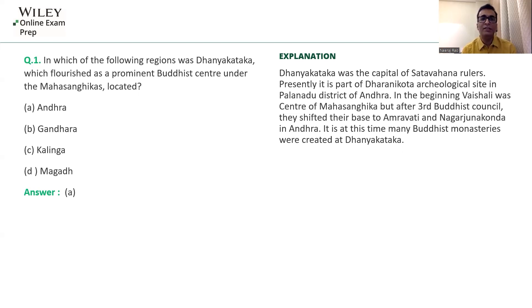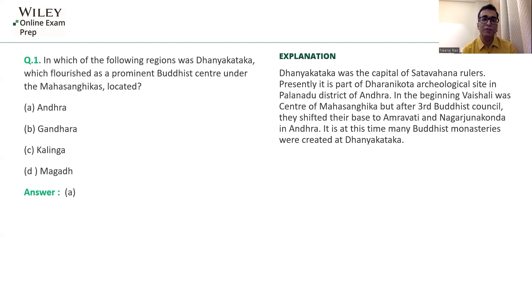Dhanya Katak, mentioned in this question, was originally the Dharanikota area in Palanadu district of Andhra. Here, seven branches of the Mahasangika developed. Moreover, this Mahasangika branch gave rise to Mahayana Buddhism in later times, by the Fourth Buddhist Council. It was one of the major centers of Buddhism, and the nearby Amaravati was also a major Buddhist center of this age.